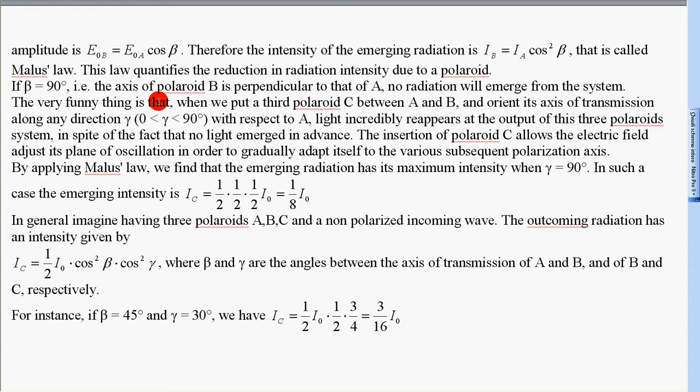The very funny thing is that when we put a third polaroid C between A and B and orient its axis of transmission along any direction gamma, with gamma included between 0 and 90 degrees with respect to A, light incredibly reappears at the output of this three polaroid system, in spite of the fact that no light emerged in advance.